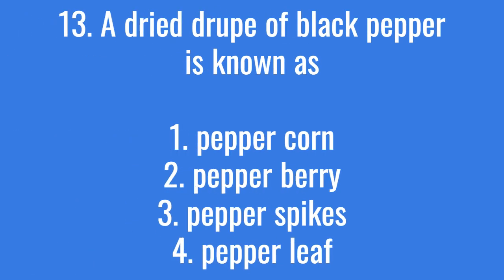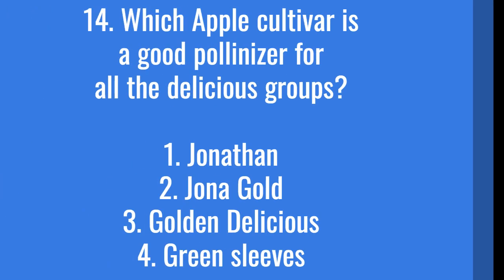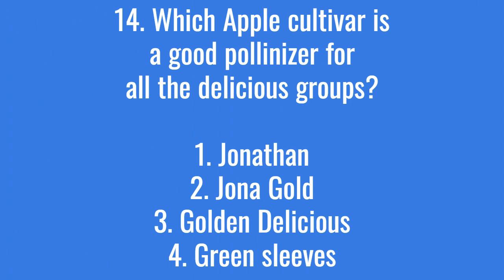A dry drupe of black pepper is known as? The correct answer is option 1: peppercorn. Which apple cultivar is a good pollinizer for all the delicious groups? The right answer is option 3: Golden Delicious.